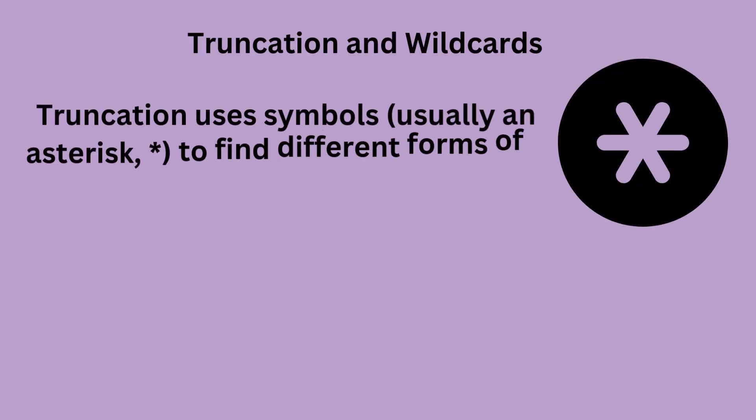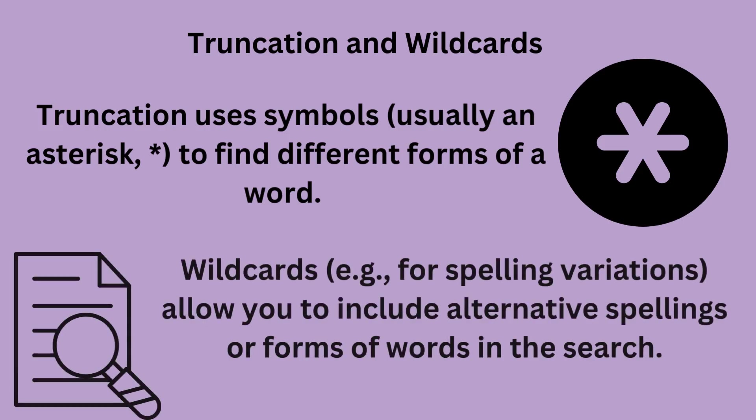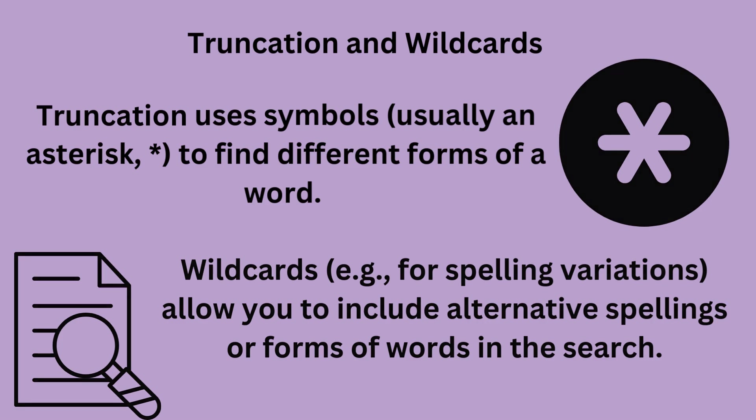Truncation and wildcards: truncation uses symbols, usually an asterisk, to find different forms of a word. Wildcards, e.g., for spelling variations, allow you to include alternative spellings or forms of words in the search.